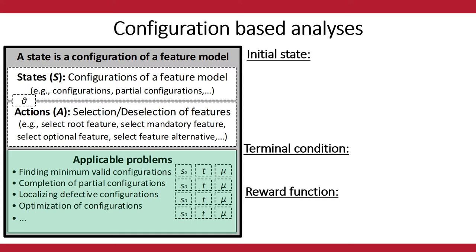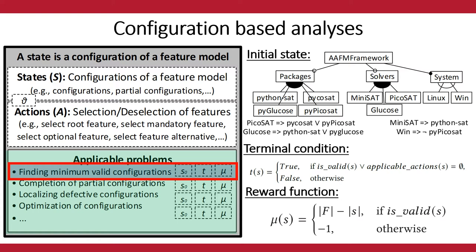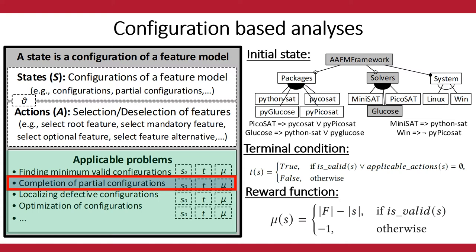For example, to solve the problem of finding a minimum valid configuration: the initial state is the empty configuration where no feature has been selected; the terminal condition is met when we find a full valid configuration or no more actions can be applied; and the reward function gives a higher value when fewer features have been selected in a valid configuration, or is negative if the configuration is invalid. A similar problem is the completion of a partial configuration, where the initial state is a given partial configuration that we want to complete.